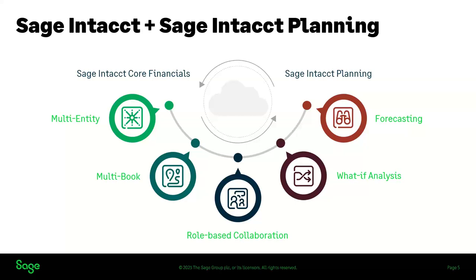The export function works similarly to the import. You'll see that one can create a new budget with all accounts and dimensions mapped appropriately. You also have the option of mapping new dimensions that don't exist in your Sage Intacct — if you want to budget on a line item that does not exist, just like the import function, you'll automatically be prompted to map those during the export process.